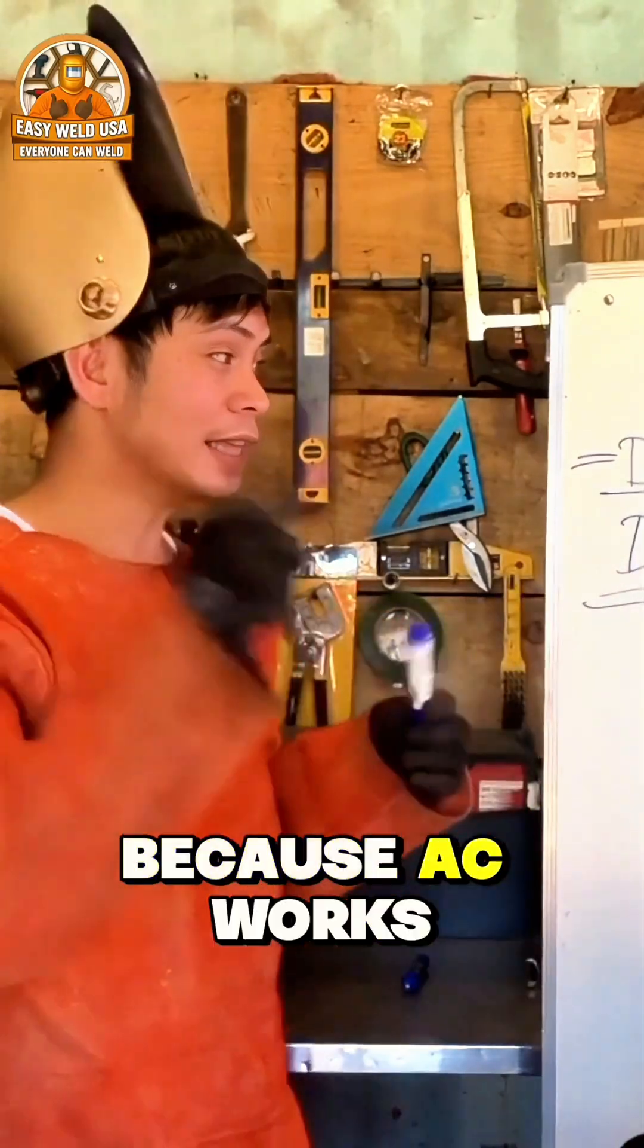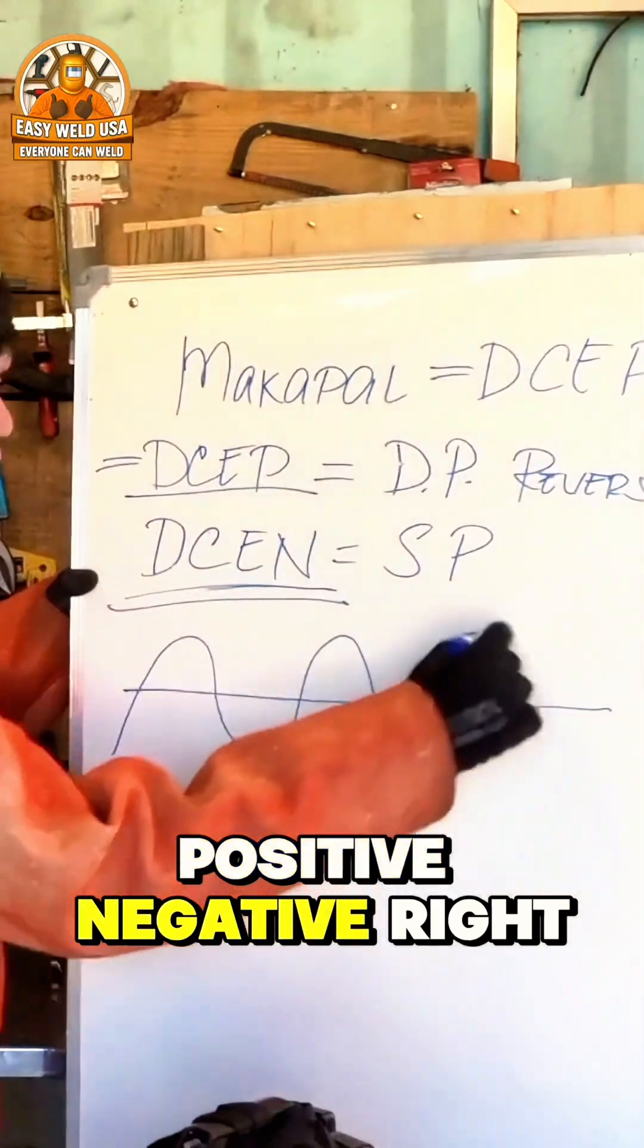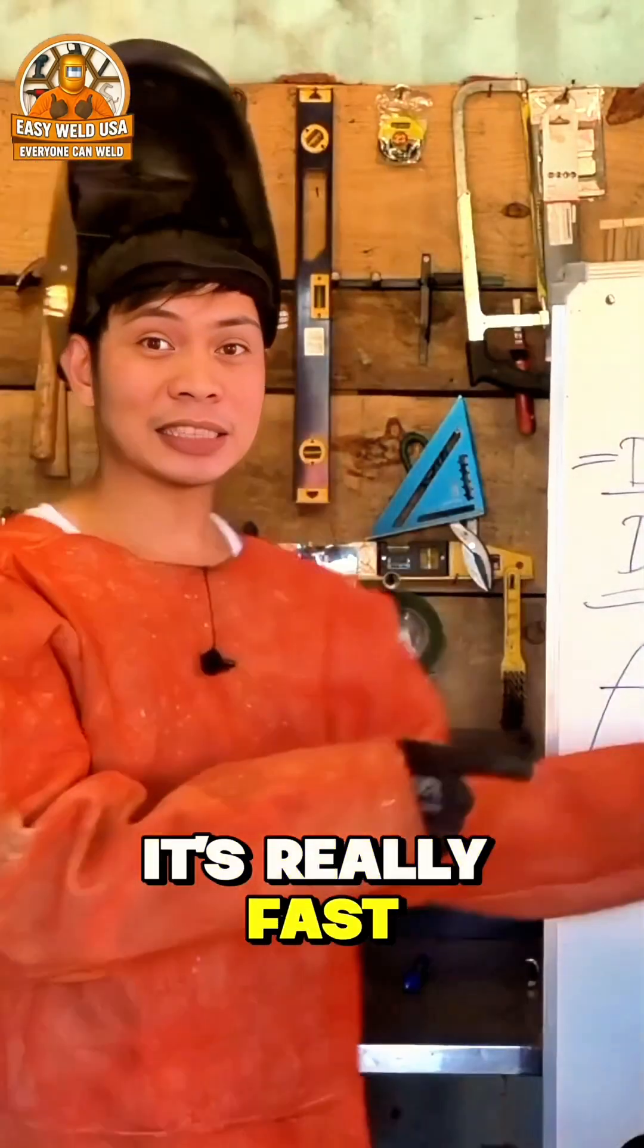There's nothing to choose from there because AC works like this. AC is like this: there's positive, negative, positive, negative, right? It's really fast, my best friends.